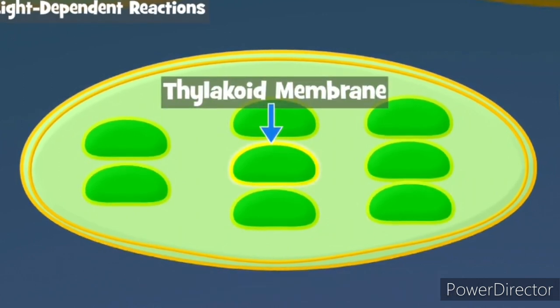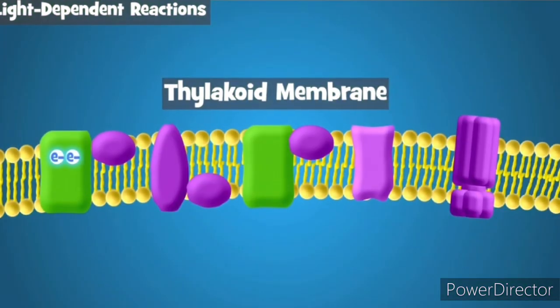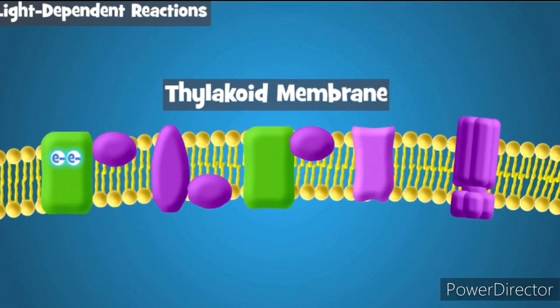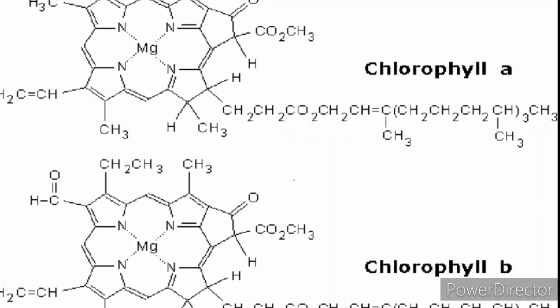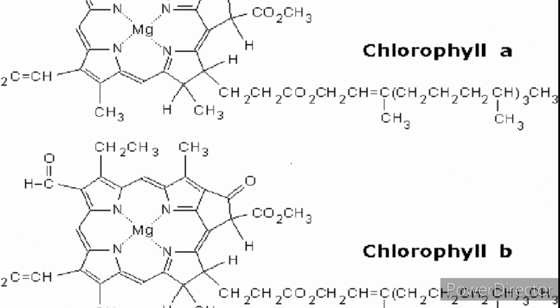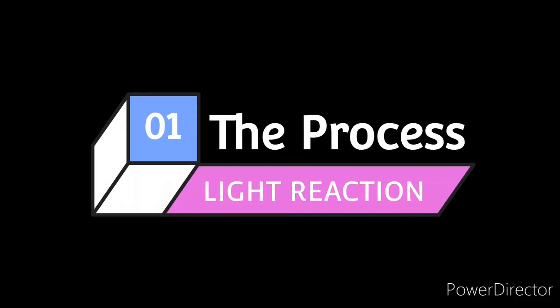Since light reaction depends on sunlight, it only occurs in the presence of sunlight. Chlorophyll A and B are the major types of chlorophylls involved in light reaction. Chlorophyll A is the principal pigment trapping light energy and chlorophyll B is the accessory pigment, which traps light and passes it to chlorophyll A.